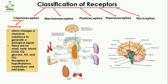Talking about chemoreceptors: the word is made up of 'chemo' and 'receptors.' Receptors mean to receive, and chemo means chemicals. So these receptors detect changes in chemical substances and generate biological signals. These chemicals may be smell and taste externally, or in the blood — carbon dioxide, oxygen, glucose, amino acids, and fatty acids.